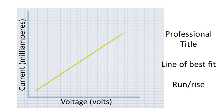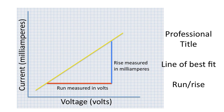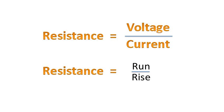Well, if we have our line of best fit, and we draw our run, note that the run is measured in volts. The rise is measured in milliamperes. And so, voltage over current is volts over amps. And that's why we're doing run over rise today.